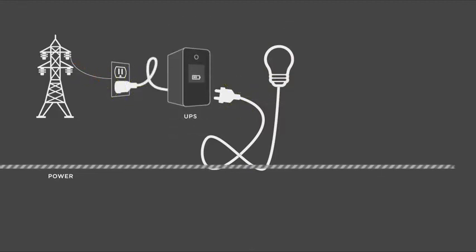Installation is simple: plug the UPS into a regular outlet, then plug the electric equipment into the UPS. When utility power is on, it passes through the UPS and goes to the equipment.